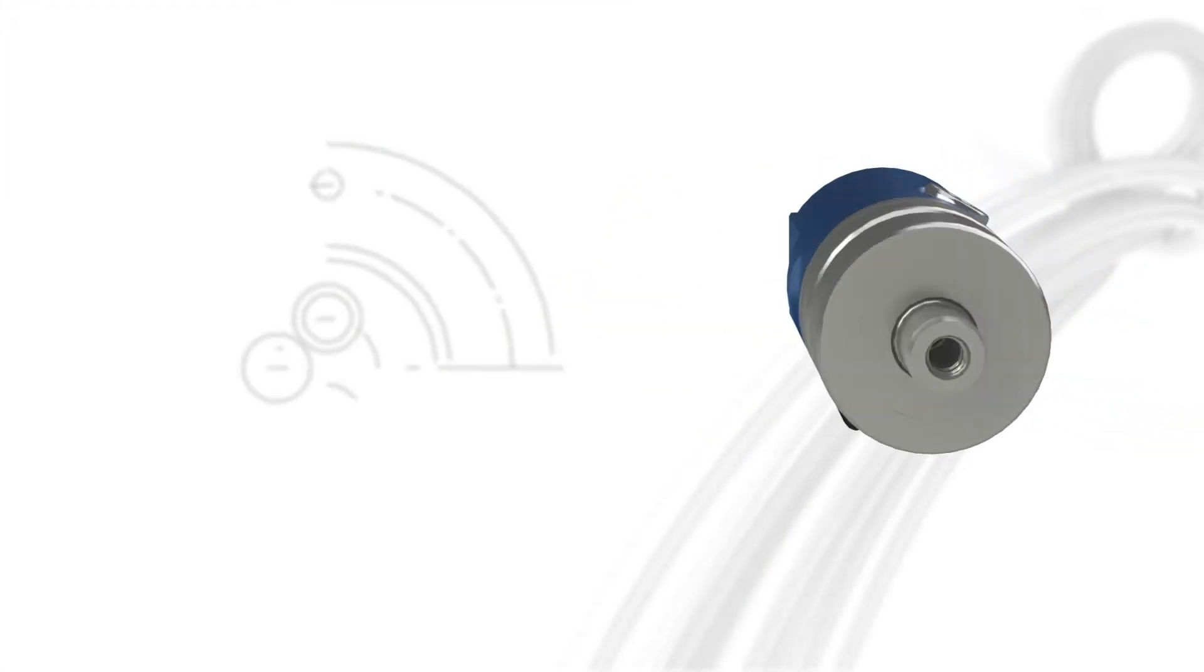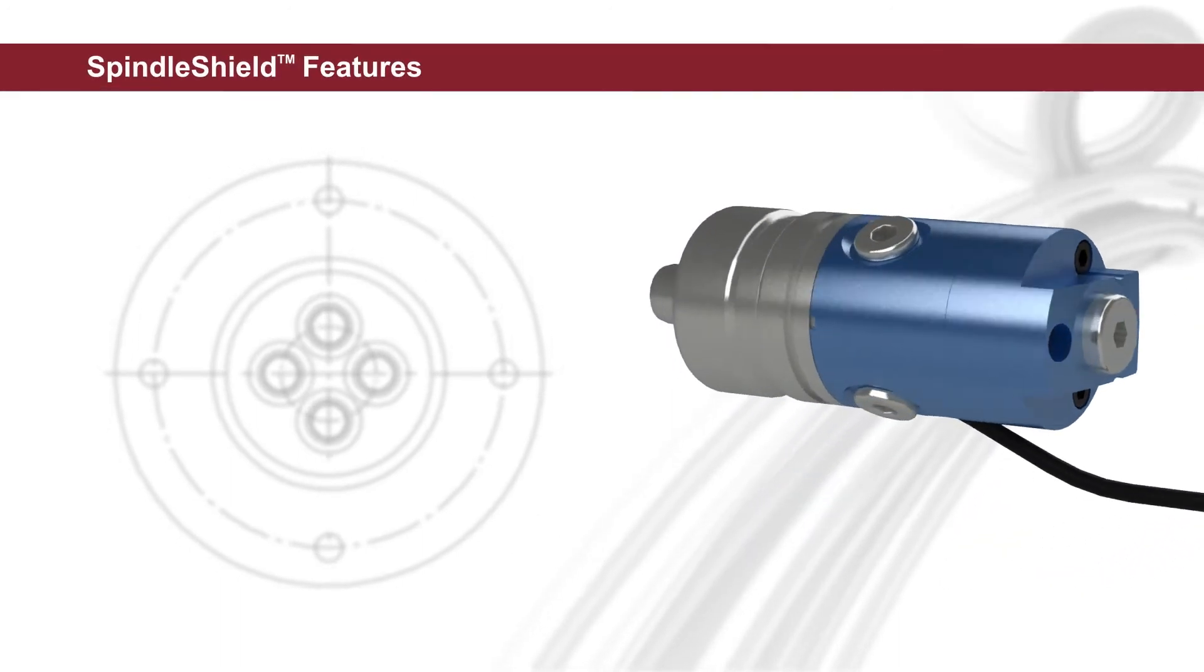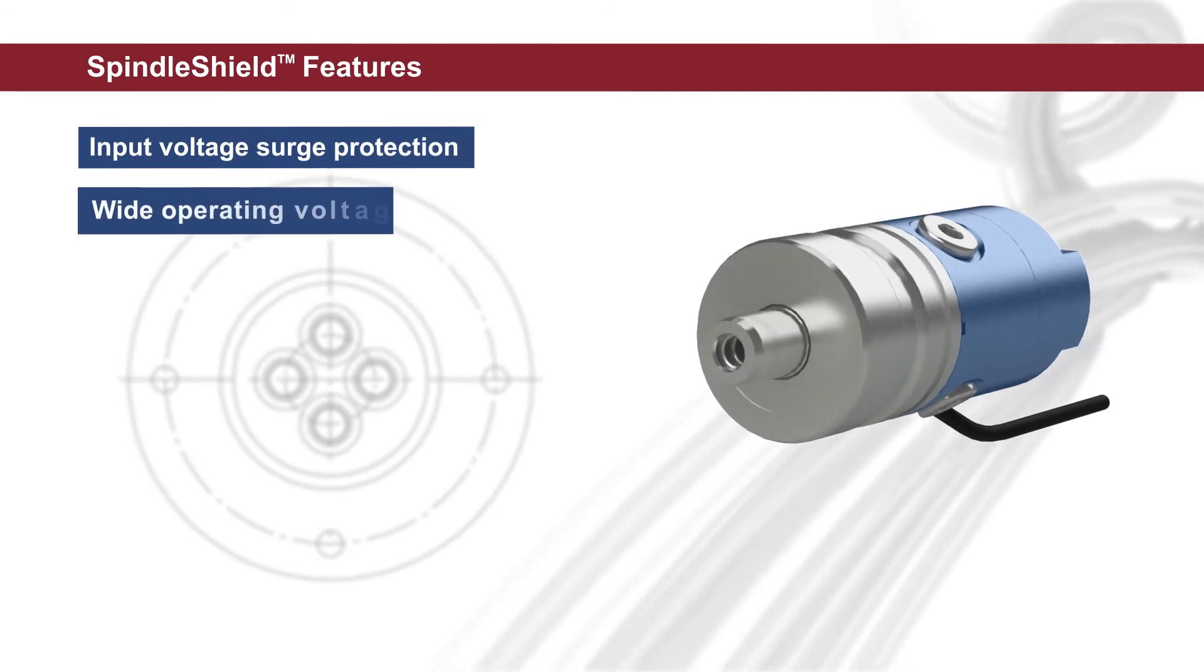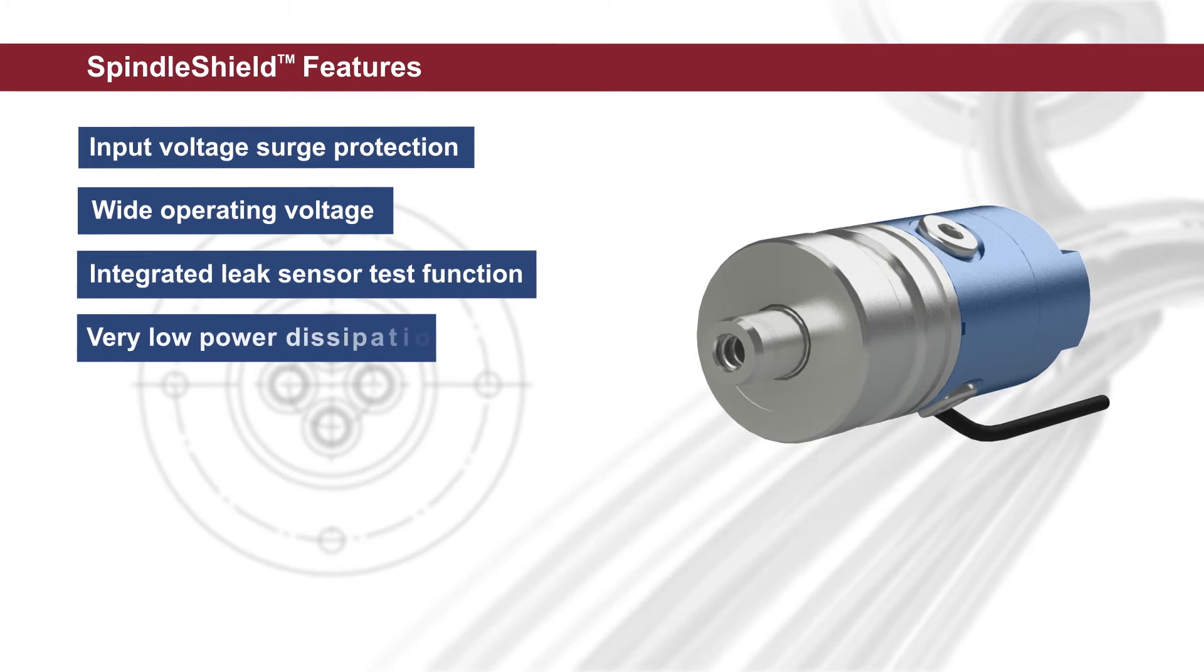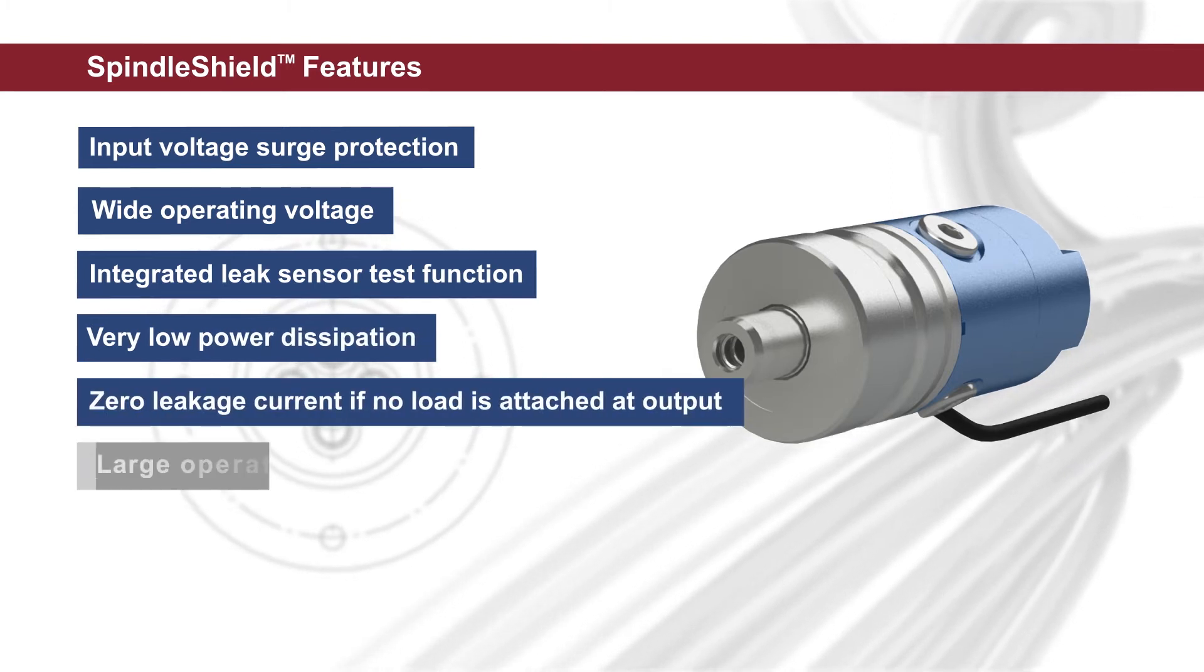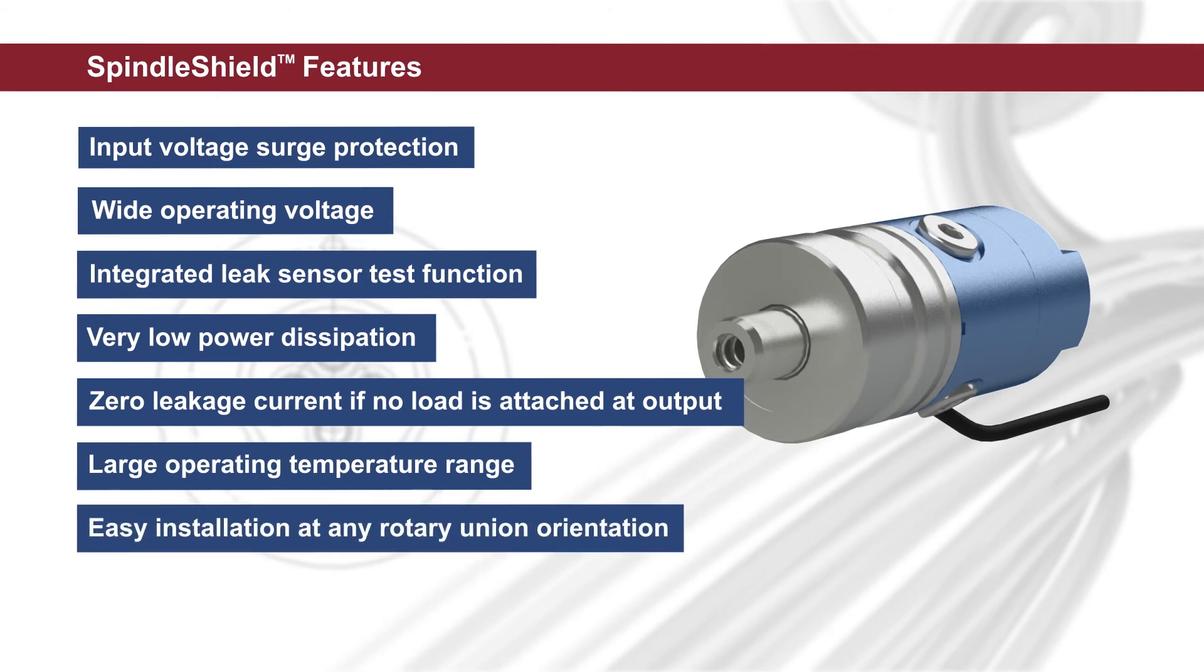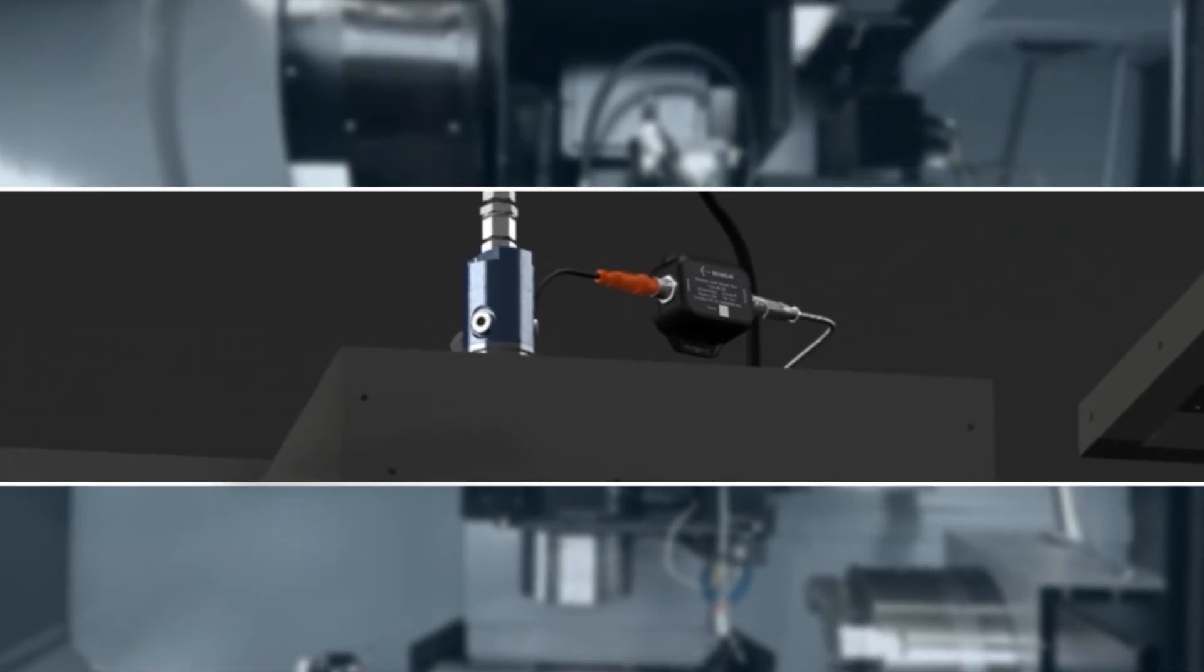Dublin has made every effort to make Spindle Shield as easy to use and versatile as possible. Features include input voltage surge protection, wide operating voltage, integrated leak sensor test function, very low power dissipation, zero leakage current if no load is attached at output, a large operating temperature range, and easy installation at any rotary union orientation.